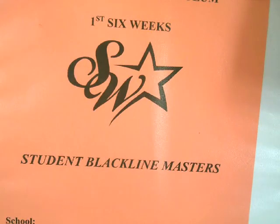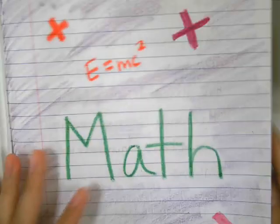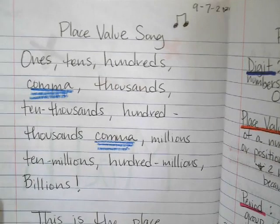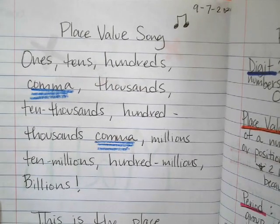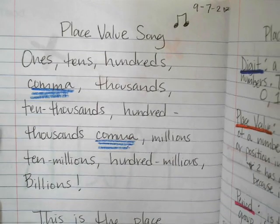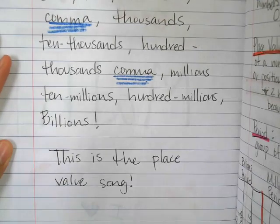Now with our math, make sure you get your Sharon Wells and your math journal. We did write some notes, so go ahead and open your math journal after the first page that we decorated. We rewrote the place value song: ones, tens, hundreds, comma, thousands, ten-thousands, hundred-thousands, comma, millions, ten-millions, hundred-millions, billions. This is the place value song.